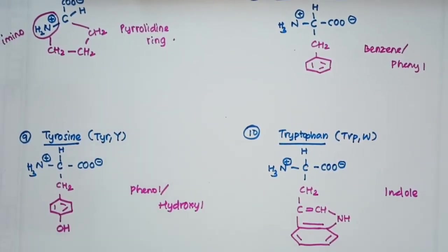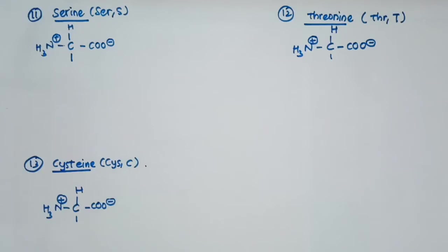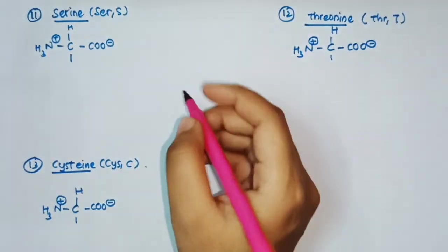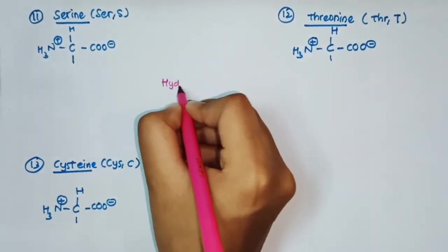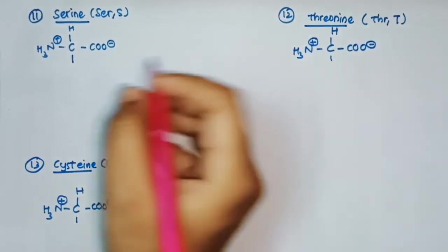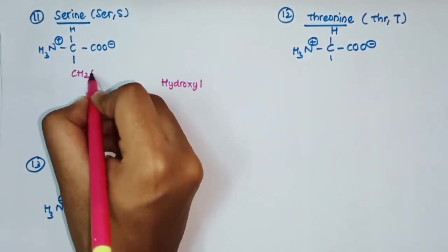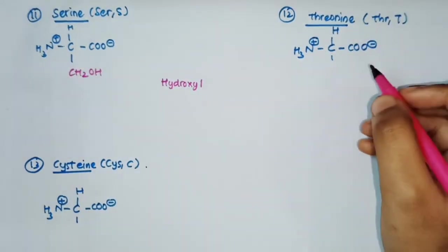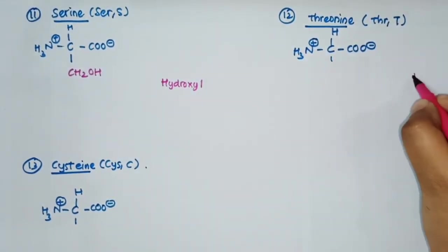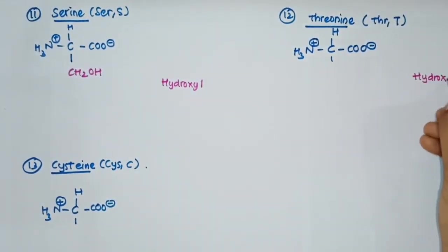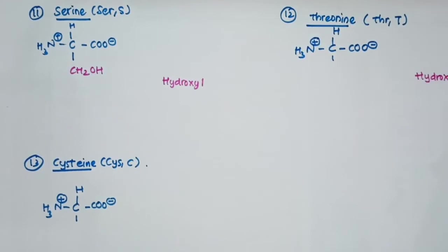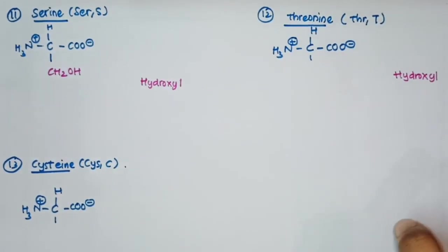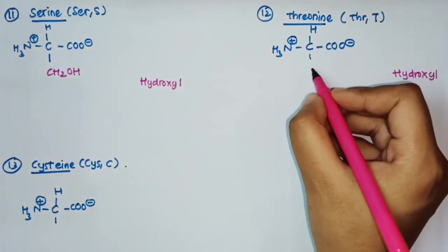The eleventh amino acid is serine, which has a hydroxyl group with R group –CH₂OH. The twelfth is threonine, which also has a hydroxyl group with R group –CH(OH)–CH₃. So we have studied three amino acids with hydroxyl groups: tyrosine, serine, and threonine.